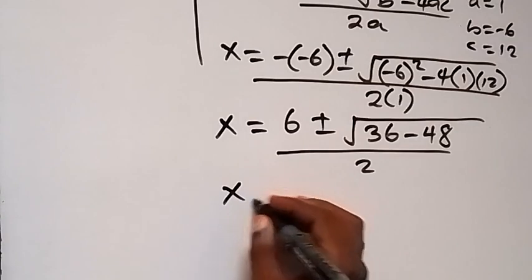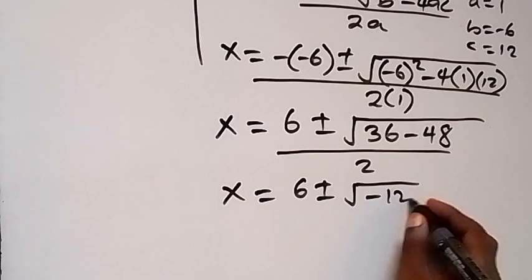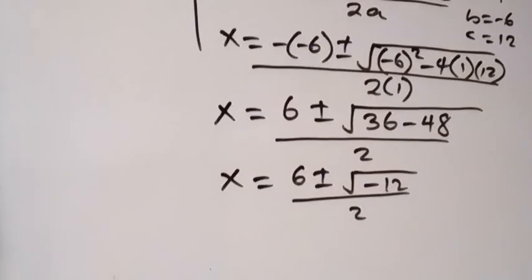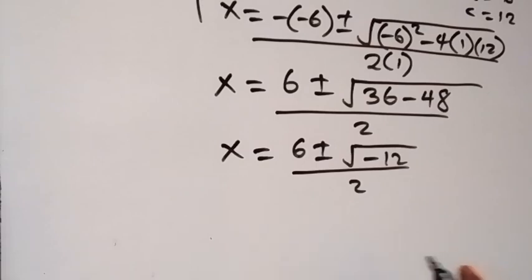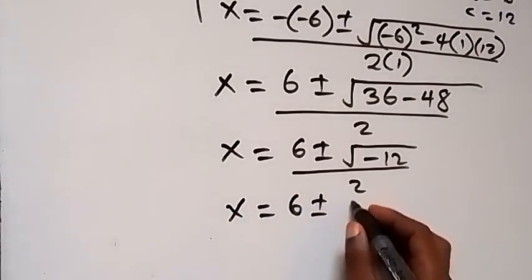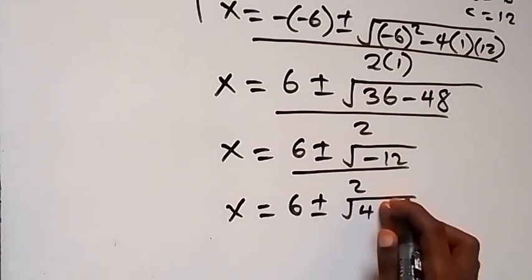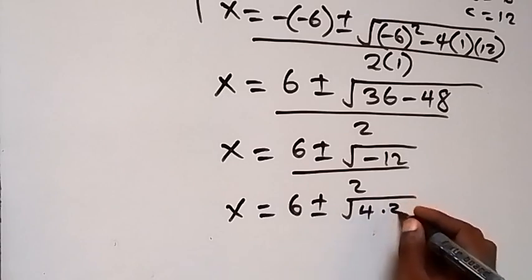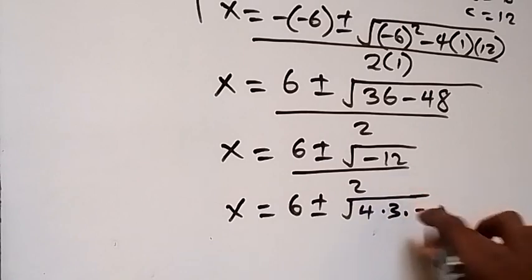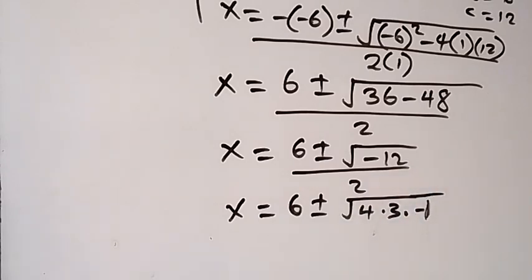So x equals to 6 plus or minus square root of minus 12, all over 2. We can break minus 12 as 4 times 3 times minus 1. So x equals to 6 plus or minus square root of 4 times 3 times minus 1. And square root of minus 1 is i.